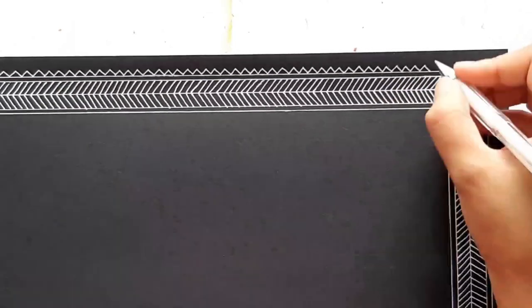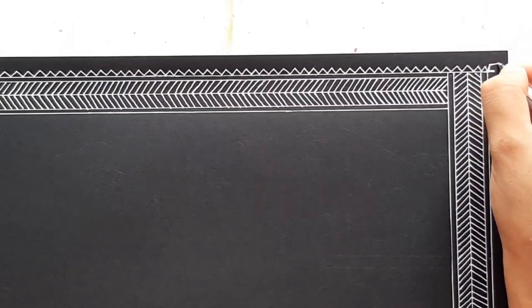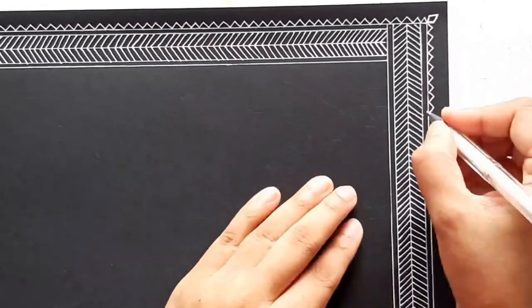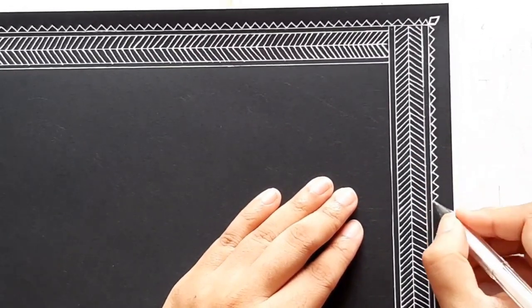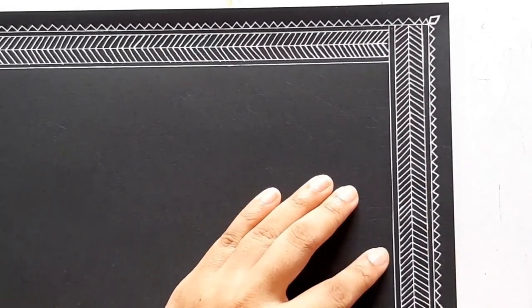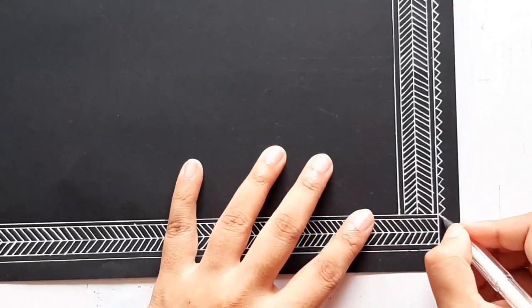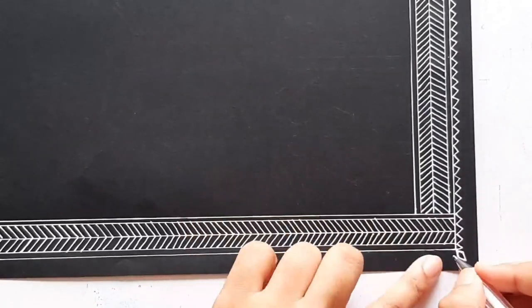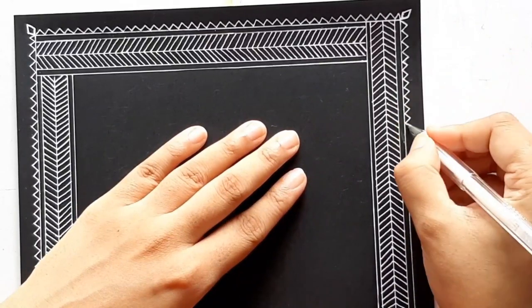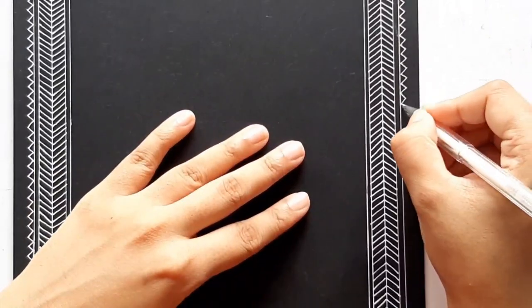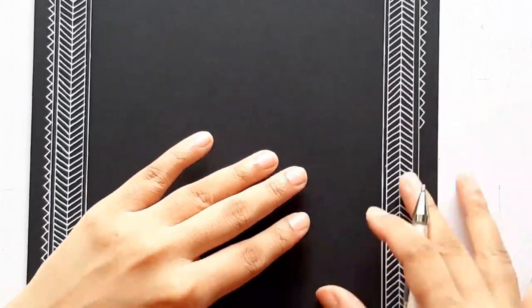Now to accentuate this border even more, I'm going to add small triangles at the edge of the borders. Make sure all the triangles are of same size and same height. This black and white combination is timeless and epic.